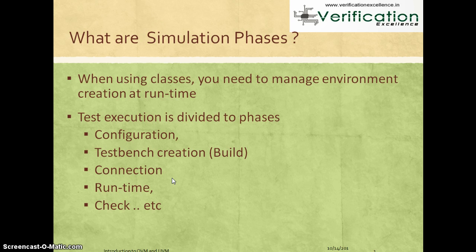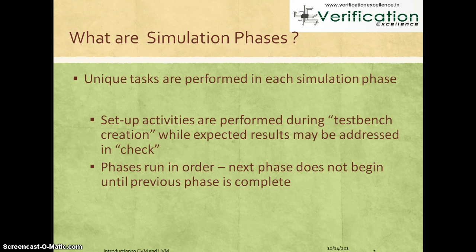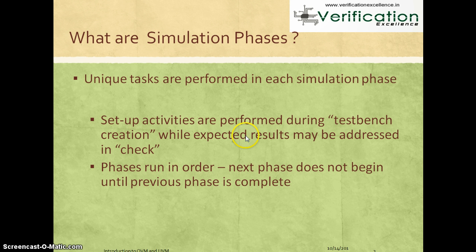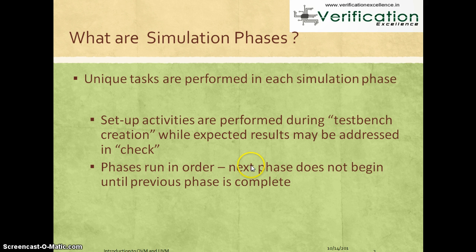So these are typically how a test execution can be divided in general. Simulation phases are those phases which perform certain unique tasks. Setup activities are performed during test bench creation, whereas checking for expected results is addressed in the check phase towards the end. All these phases run strictly in order — every test bench component will execute a specific phase before the next phase begins, and any phase will not begin until the previous phase is complete.